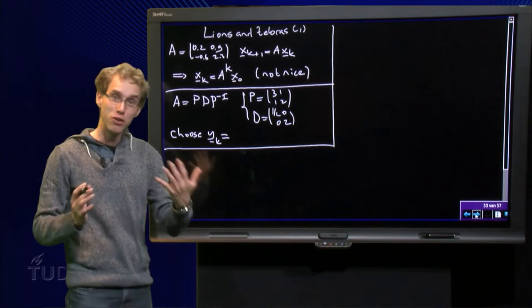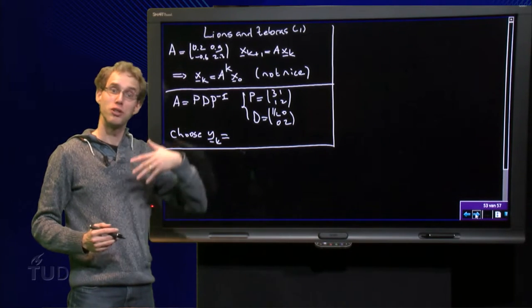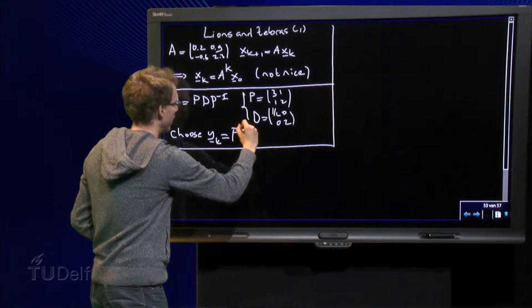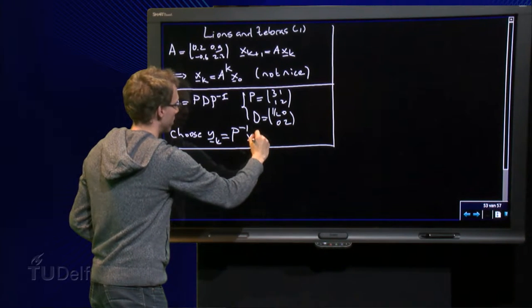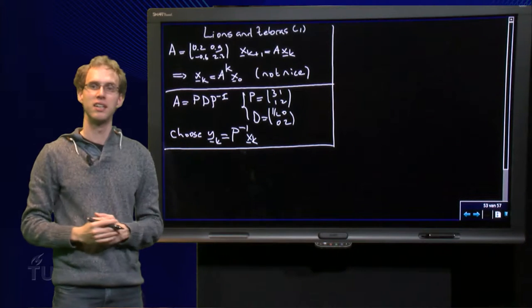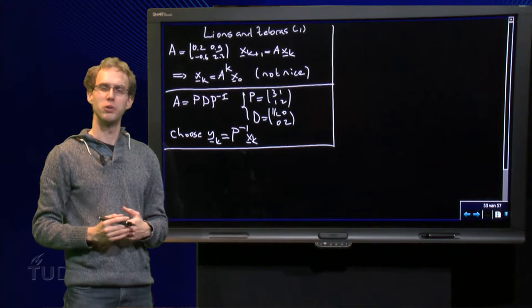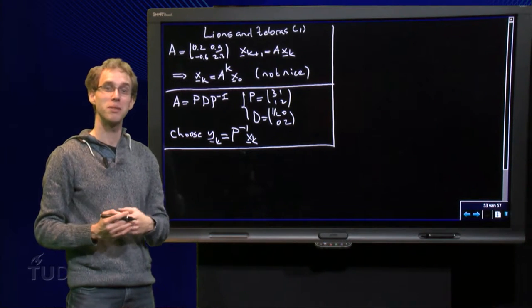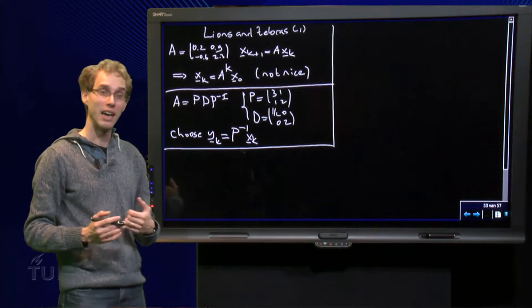Then we do a trick. We choose a new variable. Instead of x_k, we choose the variable y_k. Take y_k = P^{-1} x_k. Why do we want to do that? Well, let's see what happens then to our dynamical system in this new variable y_k.